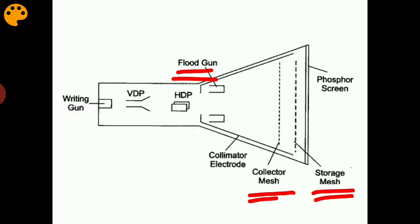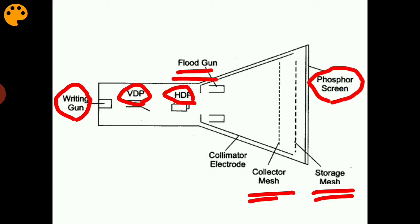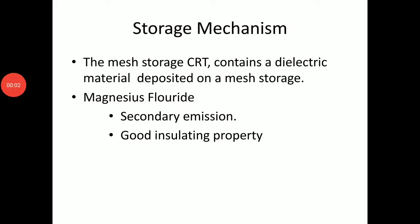These three parts are added into a CRO to make it into a storage oscilloscope. The writing gun or electron gun, the vertical deflection plates, the horizontal deflection plates, and the phosphor screen were already present in a CRO. Now let us learn the working of the storage mechanism. The storage mechanism consists of a dielectric material deposited on a mesh storage — the commonly used dielectric material is magnesium fluoride.